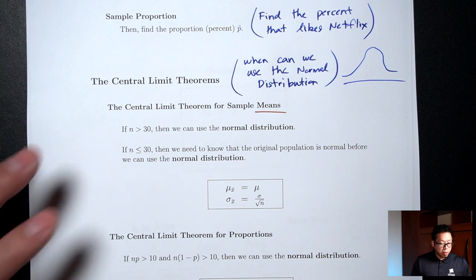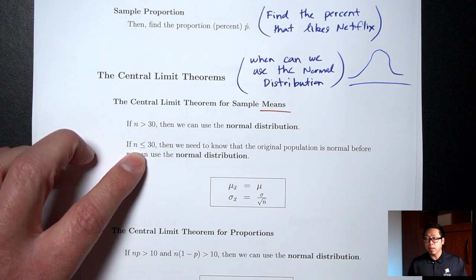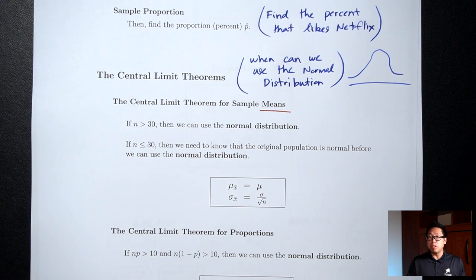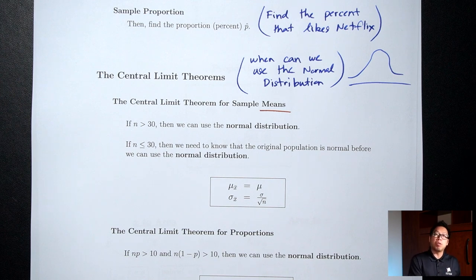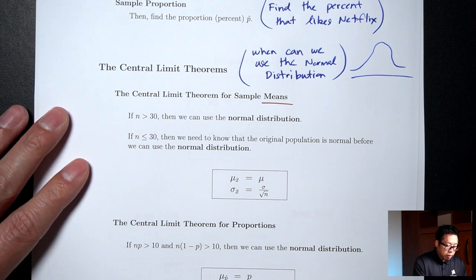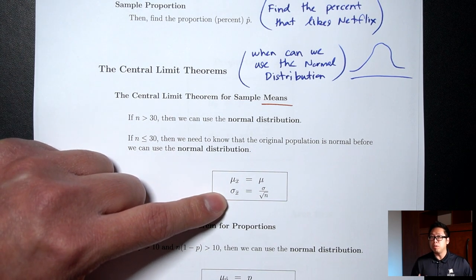What I didn't talk about last time was: what if your sample size is not large — less than or equal to 30? If your sample size is small, then you need to know that the original population is normally distributed before you're allowed to use the normal distribution. That's why in the very first lecture, I was careful to include the words 'normally distributed' in every situation, because we were only picking a sample size of one.